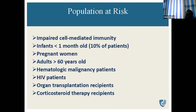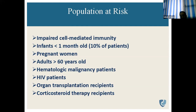In India, the first case of listeriosis was reported in 1935 in sheep from Hyderabad, and Listeria monocytogenes was first isolated in 1950 in Madras from infected sheep. In 1966, the first isolation from the cervix of women with poor obstetrical history was made, and from goats since 1960. Corticosteroid patients with depressed immunity can easily catch zoonotic diseases, especially listeria.